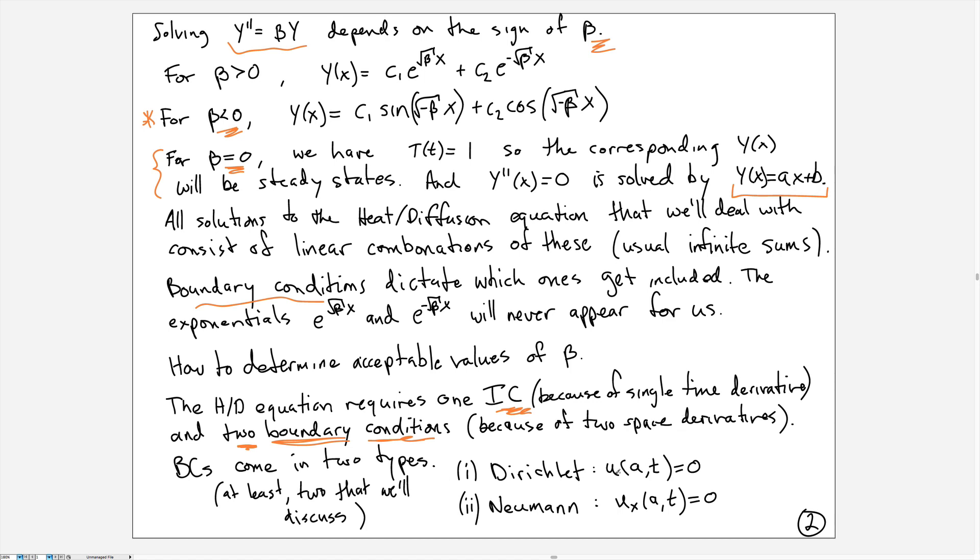There's two different types of boundary conditions that people talk about and use, and these come from different modeling applications. If you want to specify the temperature at the ends of the rod or the concentration for the diffusion equation, setting that equal to zero, you would use Dirichlet conditions, called homogeneous Dirichlet conditions. If you're using the derivative, which if you multiply by -D gives you the flux, those conditions are called Neumann conditions. These are the two that we'll discuss in this course.